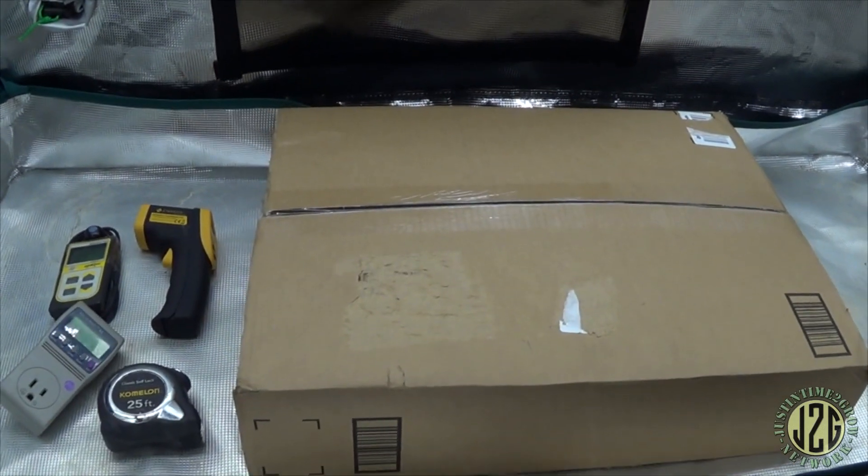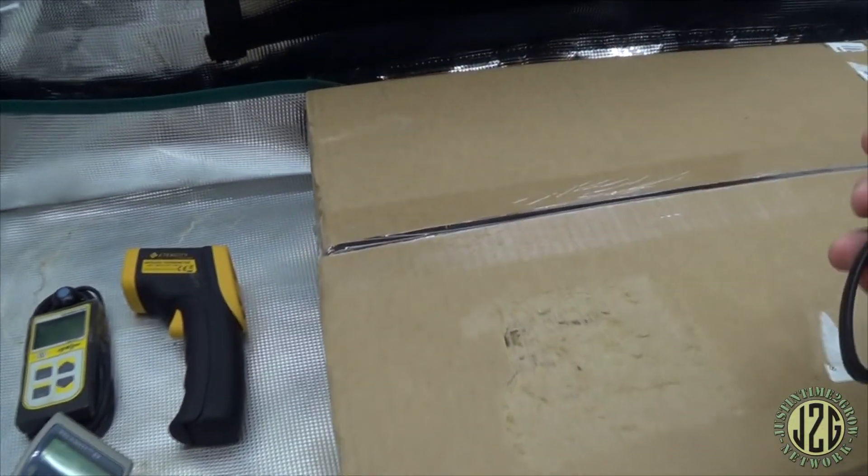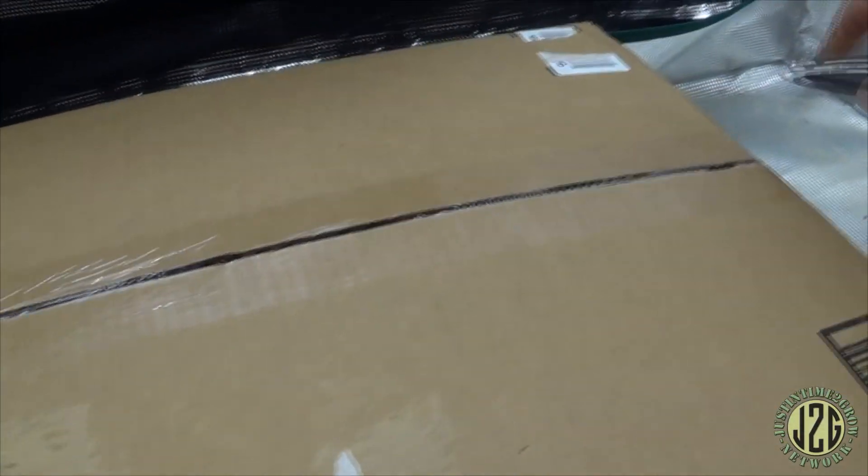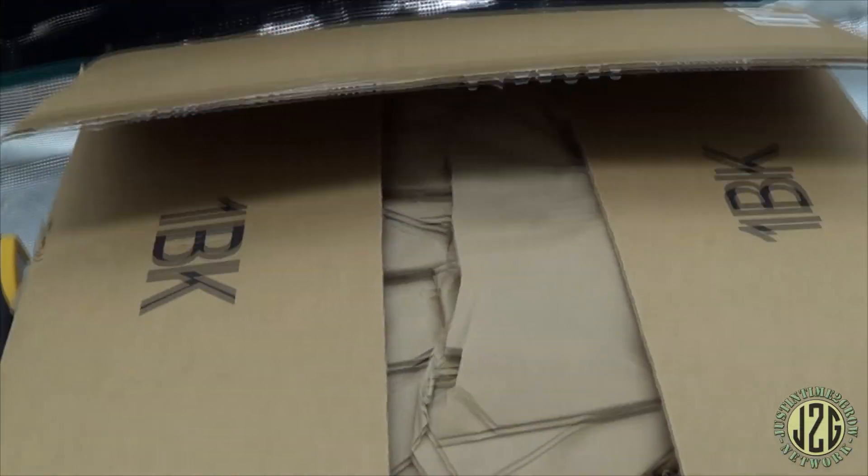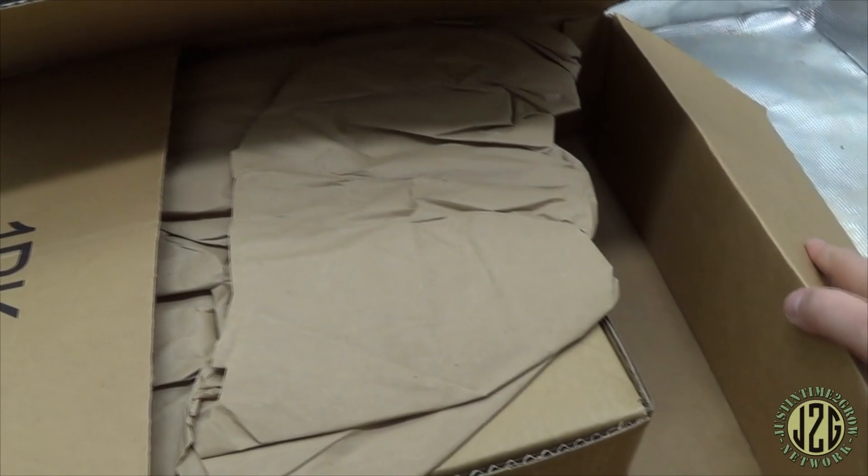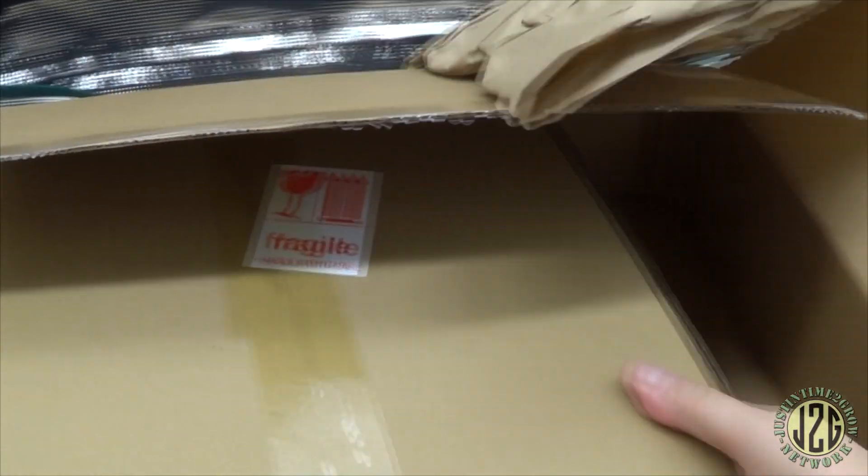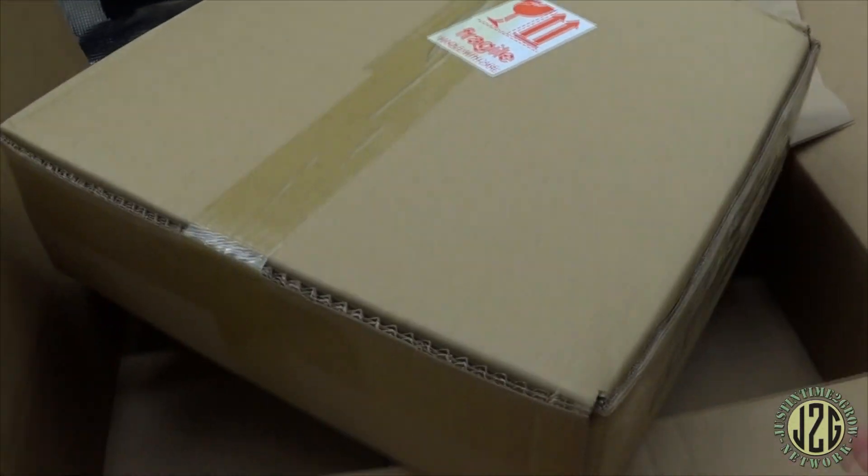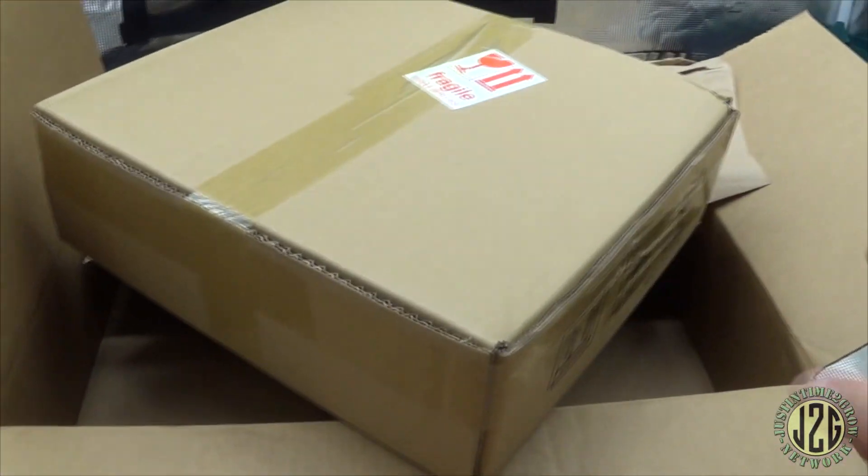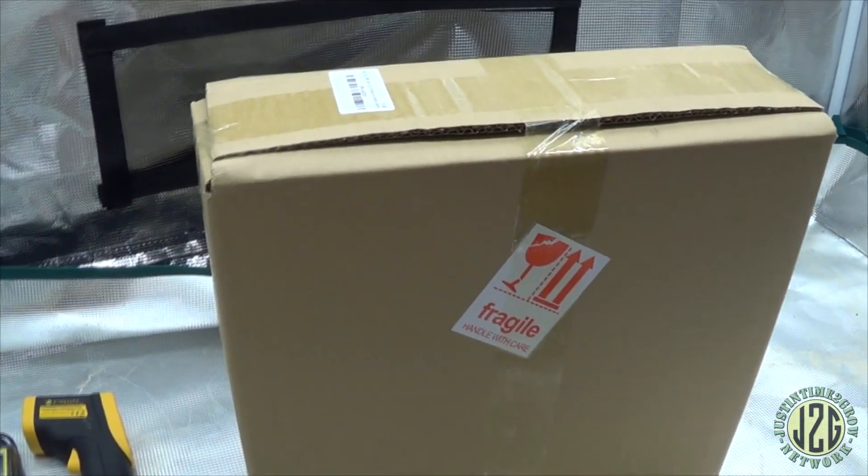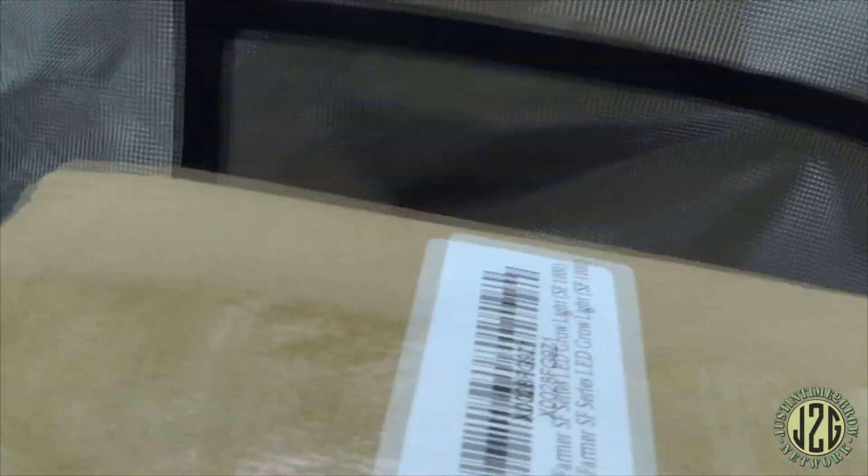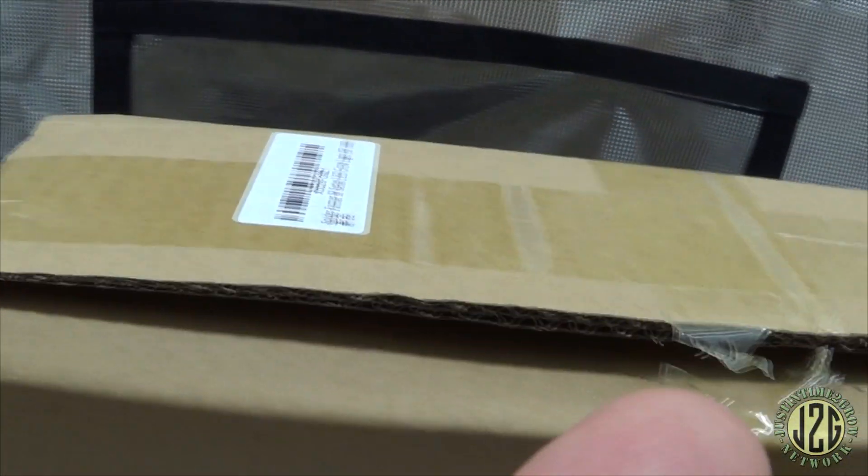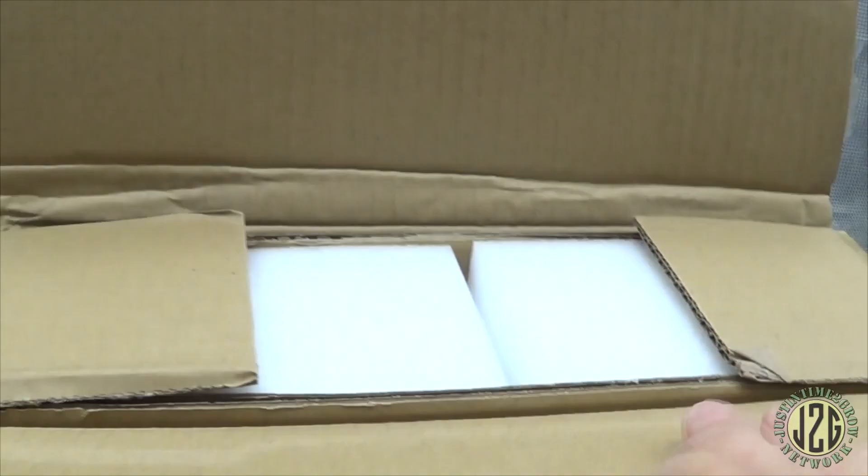We got all the meters and everything here so let's bust into this box and see what's inside. I've got my scissors here, let's get into this box. As usual, all the stuff from Amazon is always well packed with quick shipping. Now we're to the main Spider Farmer box, so let me get the other box out of the way. I think this is going to be easiest to open from the top side here.